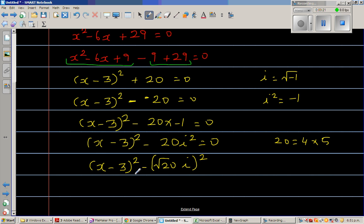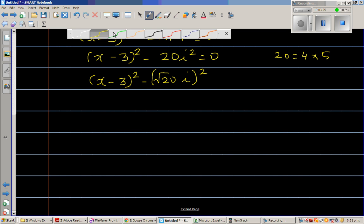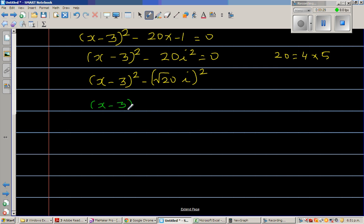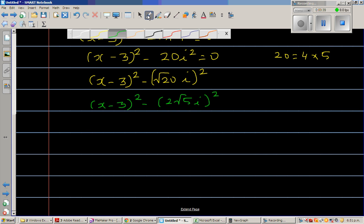Let me change color. So this is (x - 3)² minus 2√5 i the whole squared. The reason I wrote √20 the whole squared is 20.